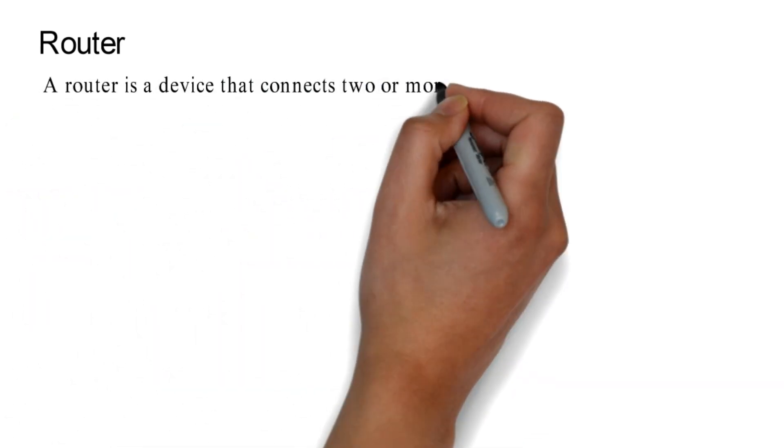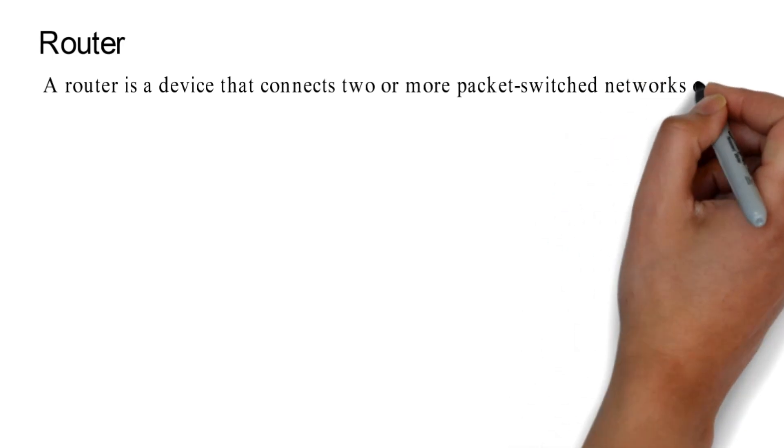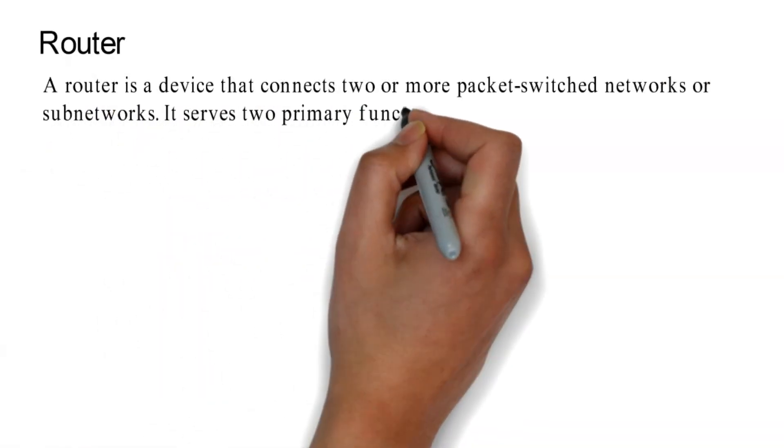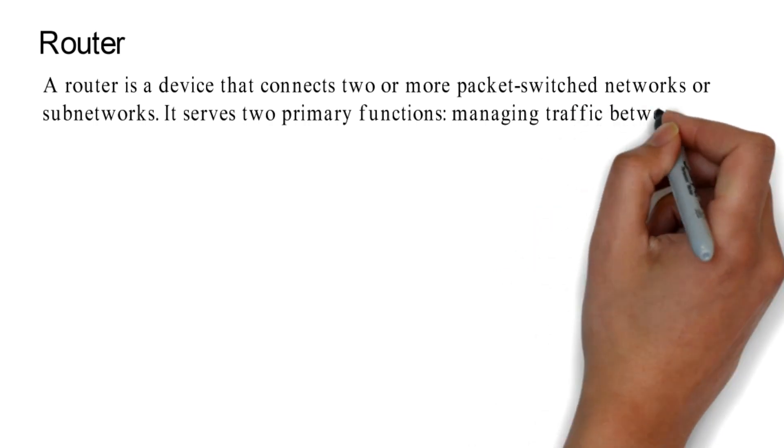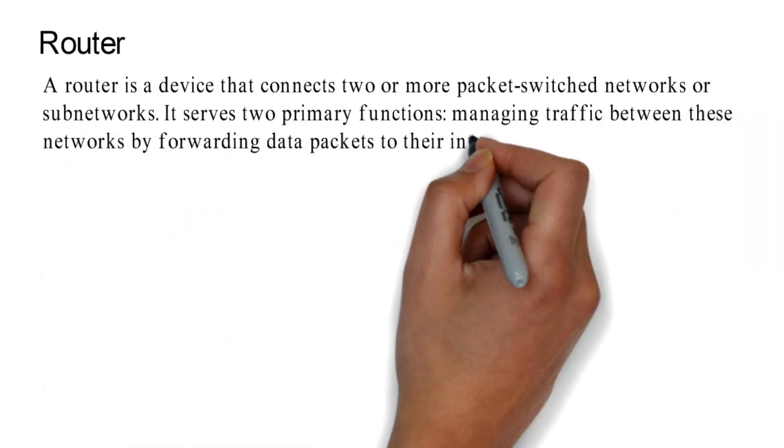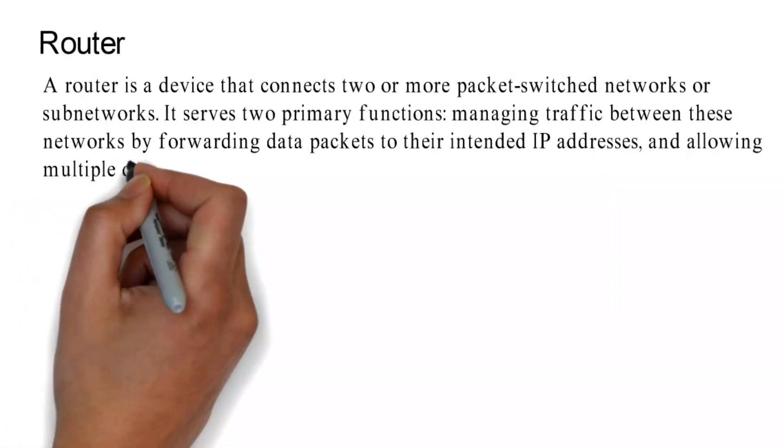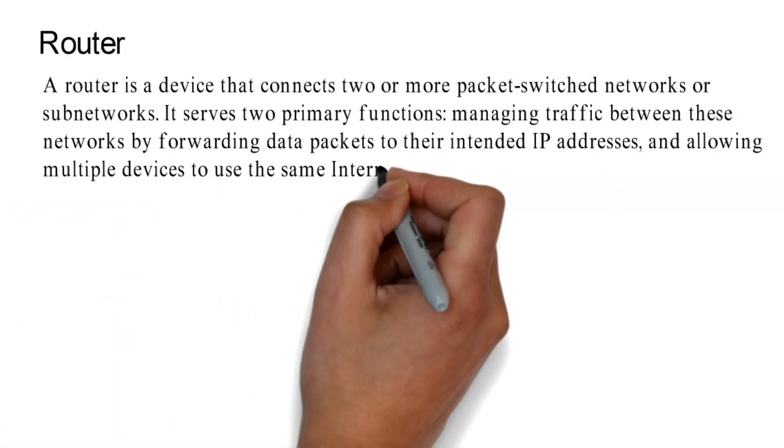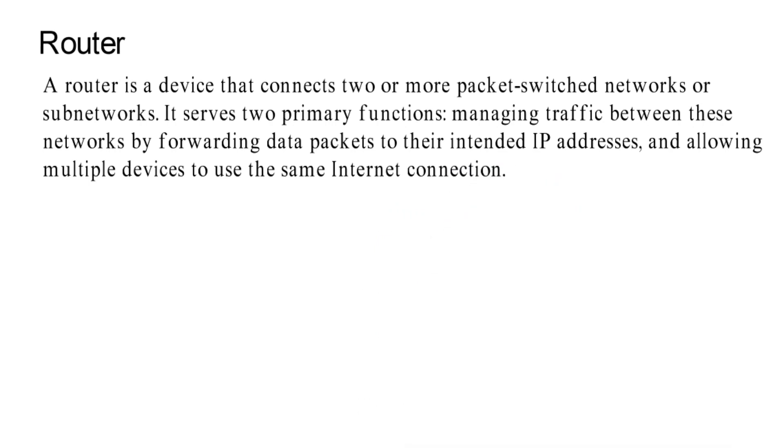Router. A router is a device that connects two or more packet-switched networks or sub-networks. It serves two primary functions: managing traffic between these networks by forwarding data packets to their intended IP addresses, and allowing multiple devices to use the same internet connection.